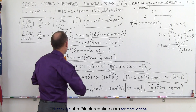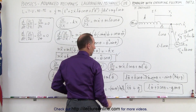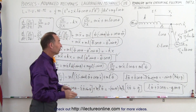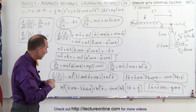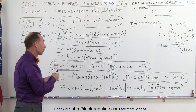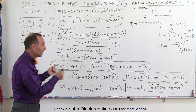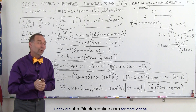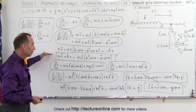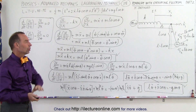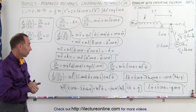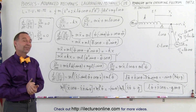Now we have our two equations of motion. The first equation and the second equation are both expressed in terms of theta and x. If you want to solve separately for x-double-dot or theta-double-dot, you would need some additional algebraic manipulation, but we won't get into that. These equations describe the motion of the pendulum where the fulcrum is moving back and forth as simple harmonic motion. And that's how it's done.